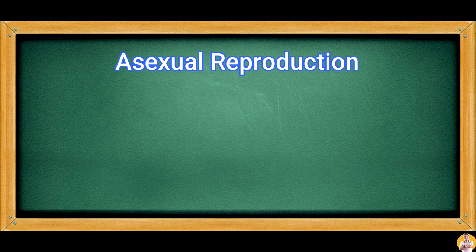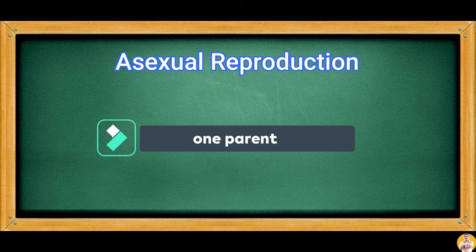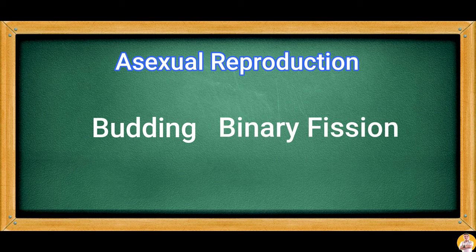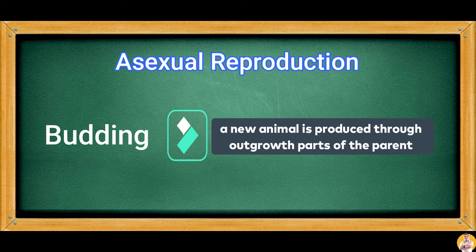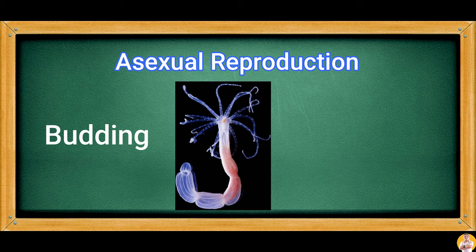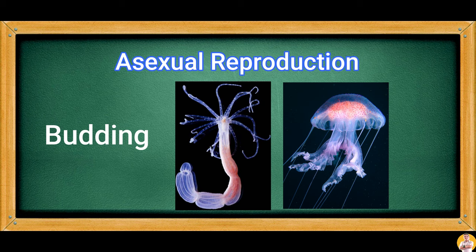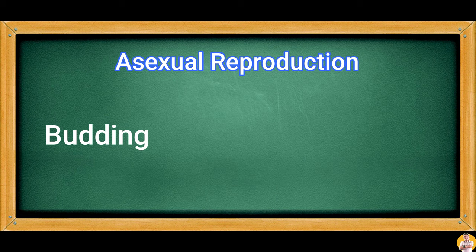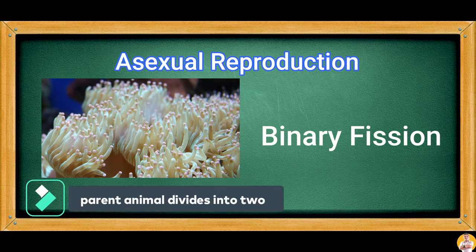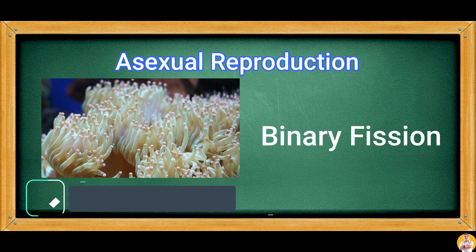Animals may also reproduce asexually. Asexual reproduction only needs one parent. The most common types are budding and binary fission. Budding happens when a new animal is produced through growth from parts of the parent — aquatic animals like hydra and jellyfish do this. Binary fission, performed by sea anemone, occurs when the parent animal divides into two, resulting in two new individuals.